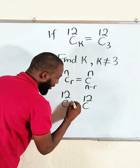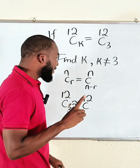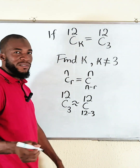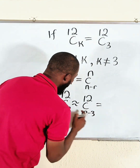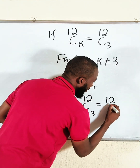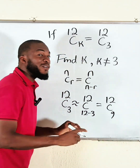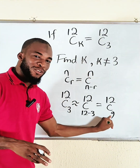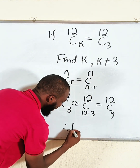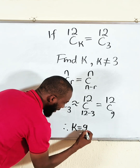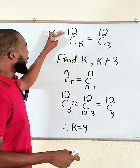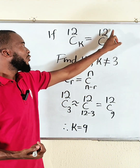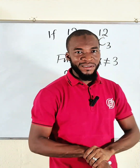12 minus 3 is 9, therefore both 12 combination 3 and 12 combination 9 will give us the same value. And since k is not 3, then k must be equal to 9. You can plug it back, evaluate 12 combination 9, and see the result compared to 12 combination 3 — they must be exactly the same.